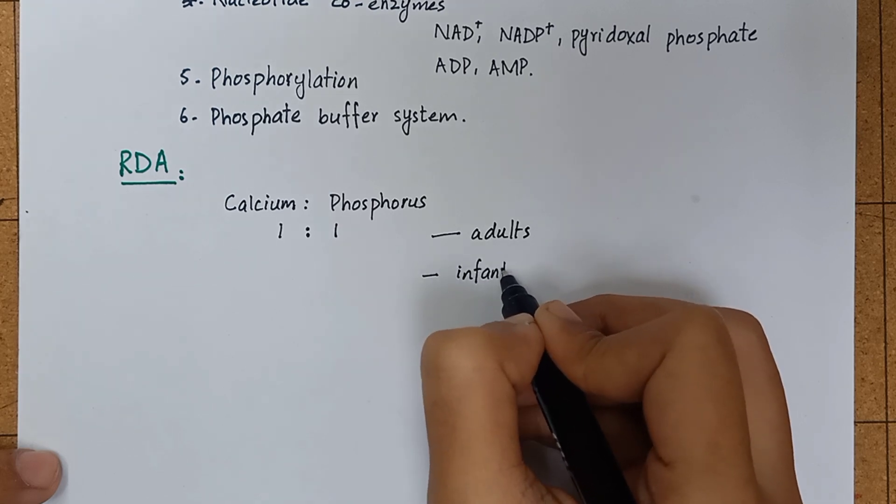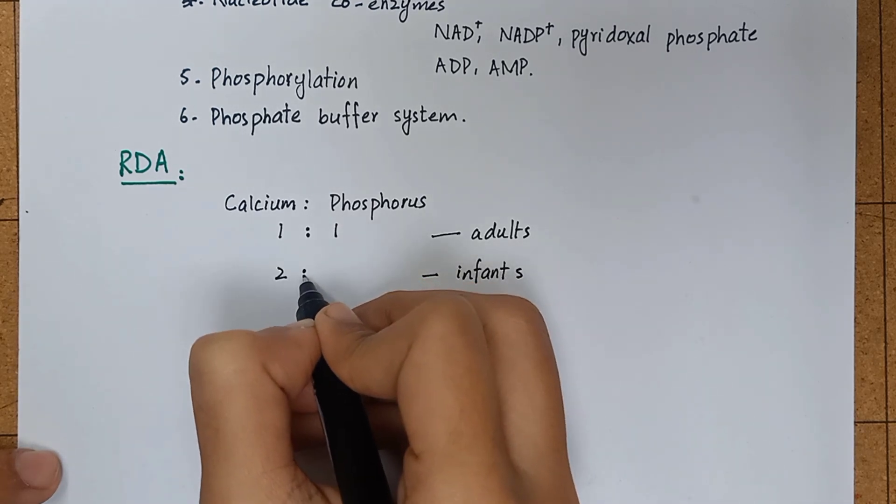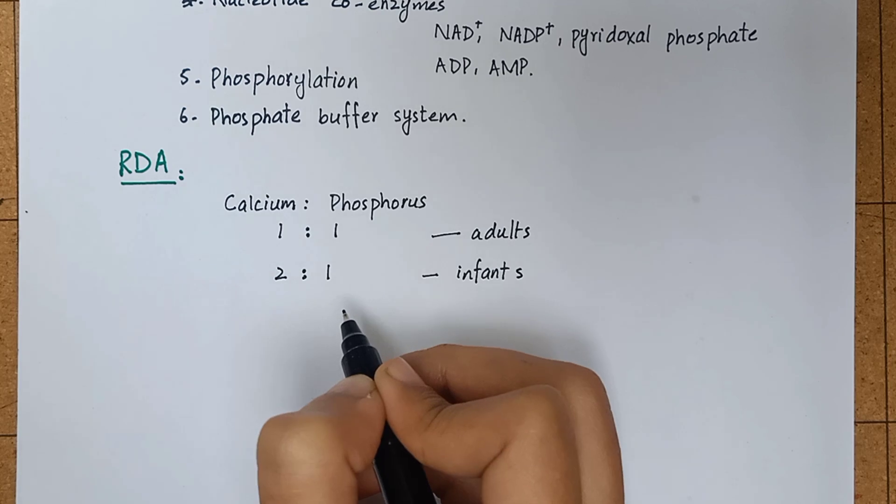For infants, the ratio of calcium to phosphorus is 2:1, which is based on the ratio found in human milk.